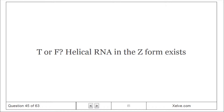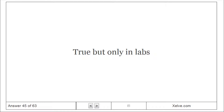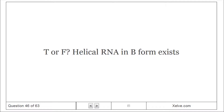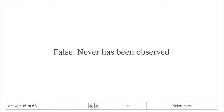True or false: helical RNA in the Z-form exists? True, but only in labs. True or false: helical RNA in the B-form exists? False — it has never been observed.